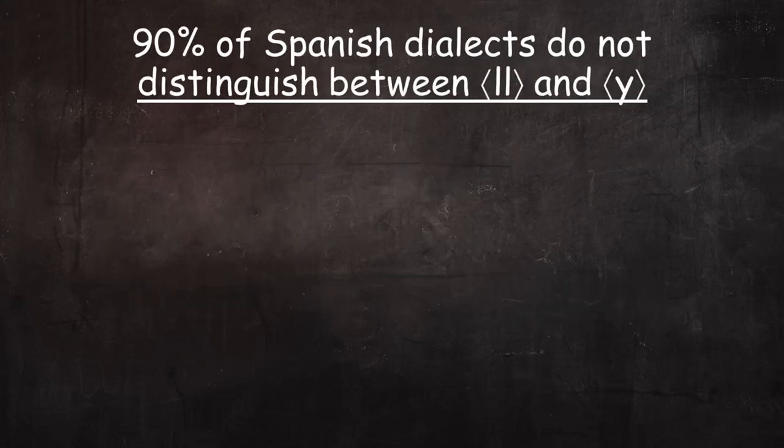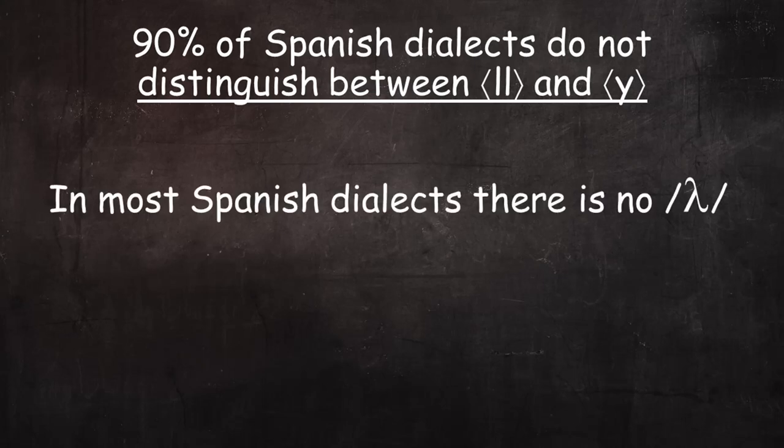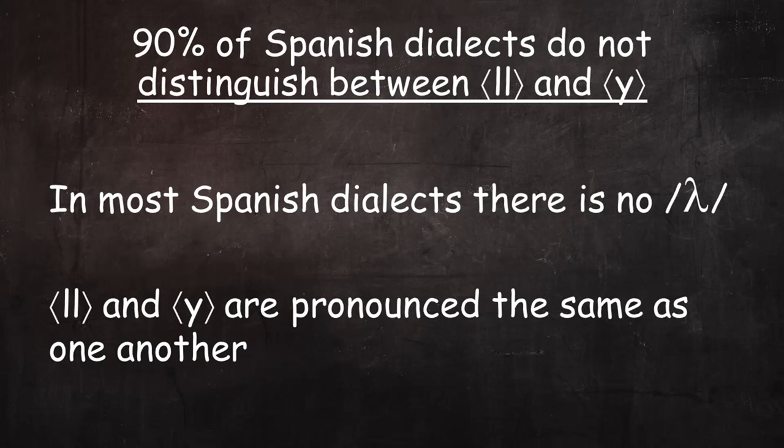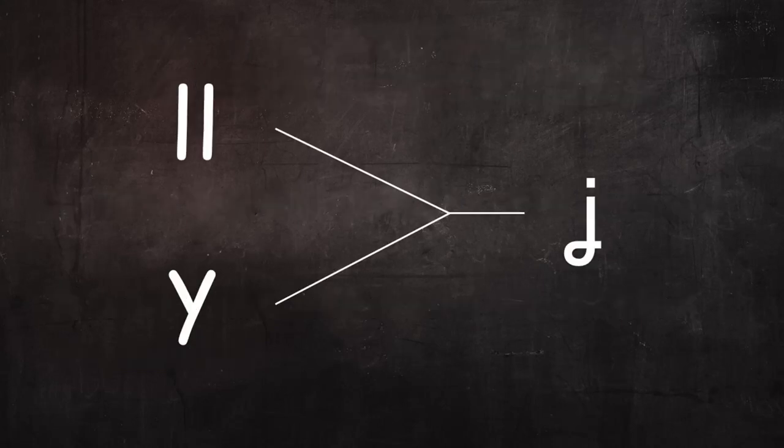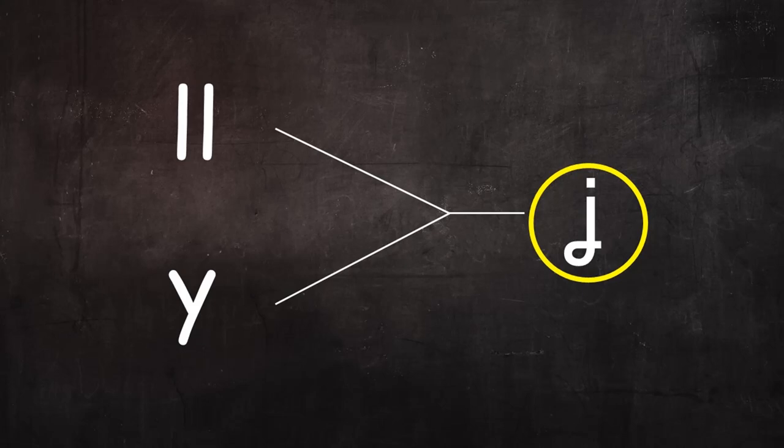As mentioned at the beginning, around 90% of Spanish dialects do not distinguish between double L and Y. Another way to think of it is that in most dialects there is no elie, and double L and Y are pronounced the same as one another. So how do all these dialects pronounce the single sound used for both double L and Y? Well, it depends on the region. Let's look at some of the most common variations.